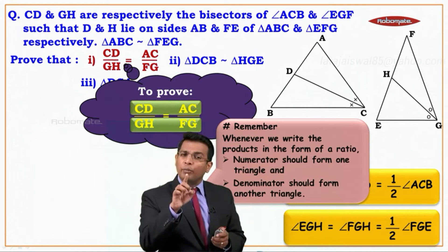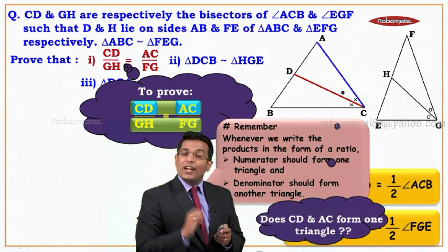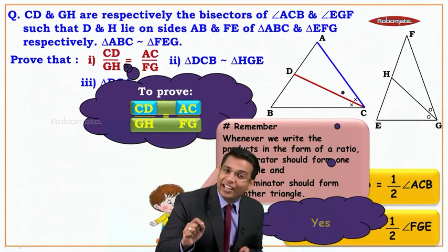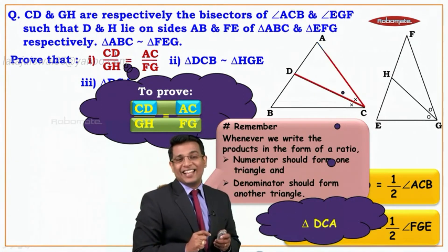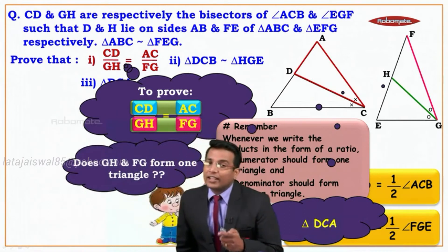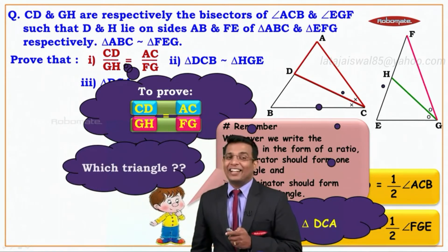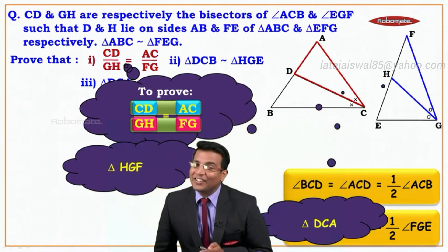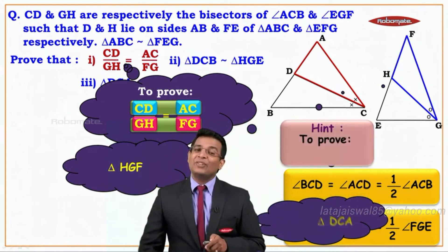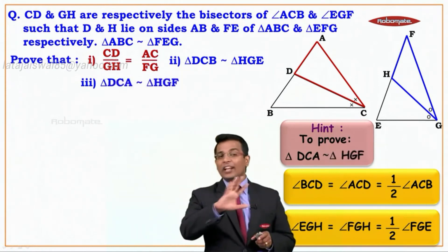From the numerator, CD and AC — do they belong to one triangle? Yes, that is triangle DCA. From the denominator, GH and FG — that forms triangle HGF. So we need to prove triangle DCA is similar to triangle HGF. If we get this, we get the proof.